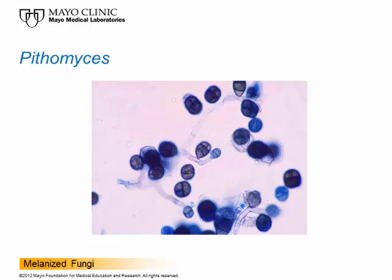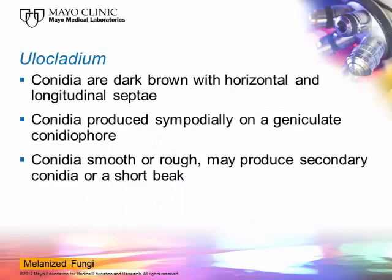The next organism is Ulocladium, which produces dark brown conidia with horizontal and longitudinal septations. The conidia are produced sympodially, meaning they're produced on one side and then the other of a conidiophore. As the conidiophore grows, it bends to one side or the other, and the conidia are produced on those bends. This type of conidiophore is called a geniculate conidiophore — it's like a series of bent knees.